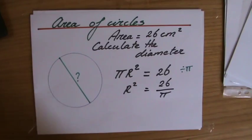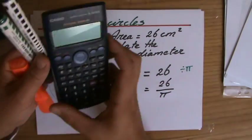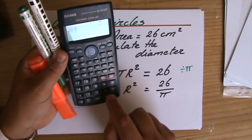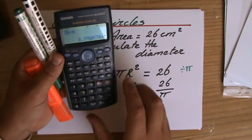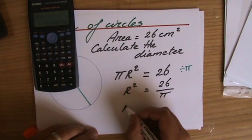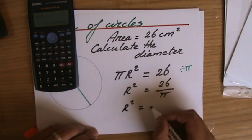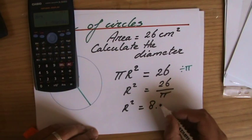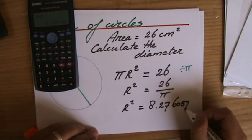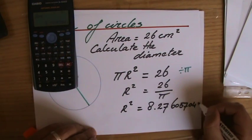Now if you're not very confident yet, you could work that out first. Let's do 26 divided by π equals and give me a number and let's write it down. You don't have to. Once you are more experienced, r² I should say equals 8.27605704.